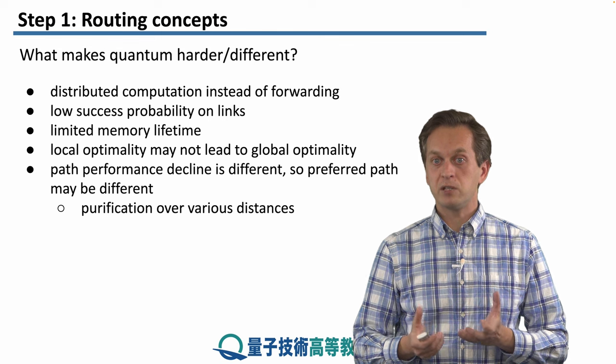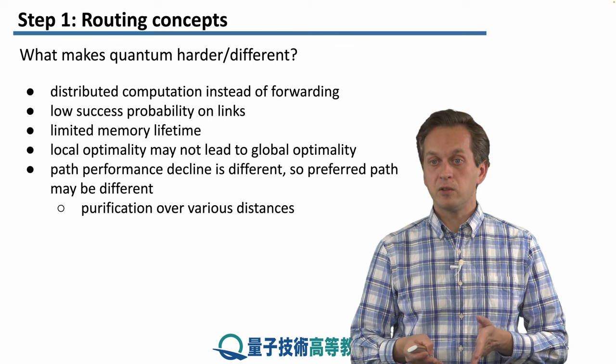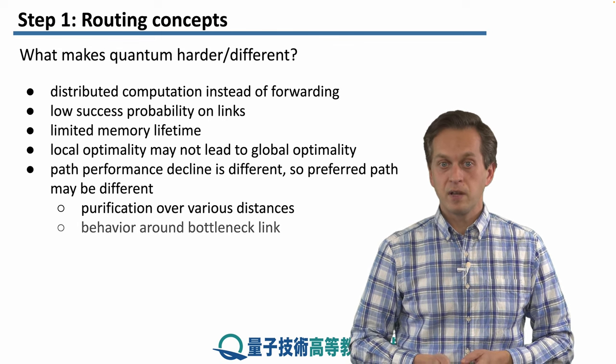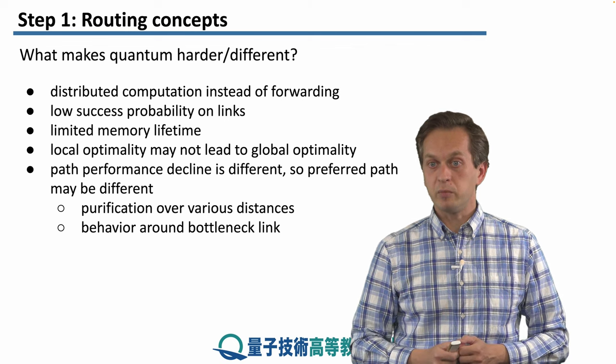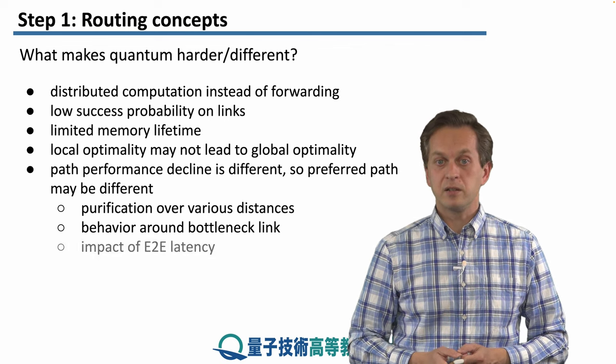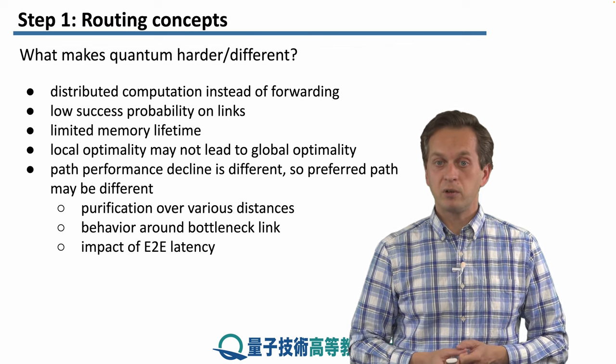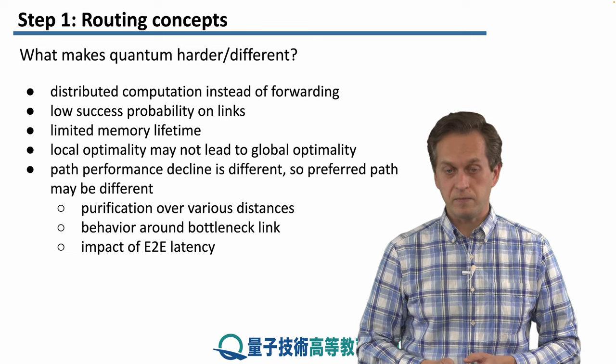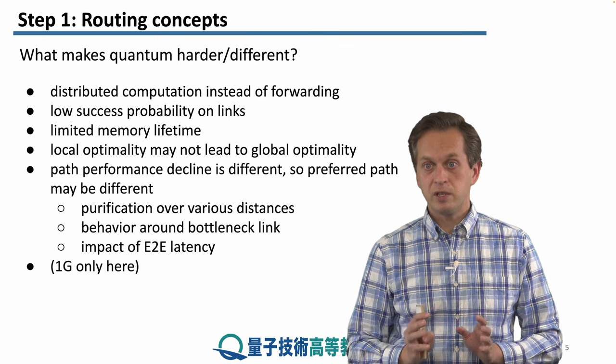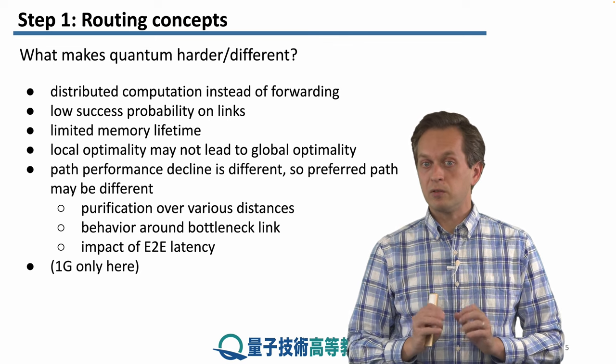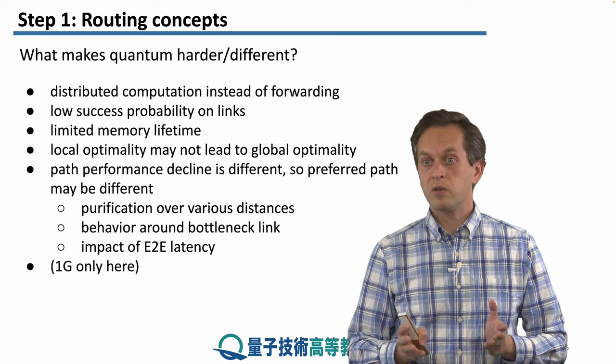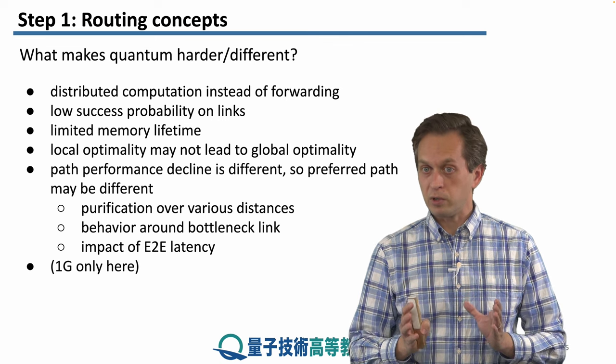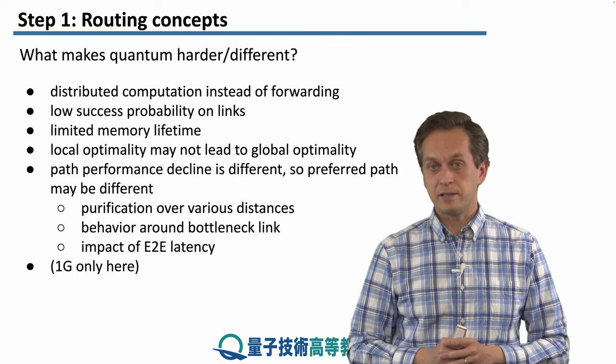Also, the path performance decline is different, so preferred path may be different as well. We have to think about purification over various distances, not just at the link level. We have to think about behavior around bottleneck links. This is connected to traffic, which we're going to talk about, and also how all of these impact the end-to-end latency. Now, all of these are related to 1G networks, which is what we are going to talk about, or which is what we are going to focus on in this lesson.